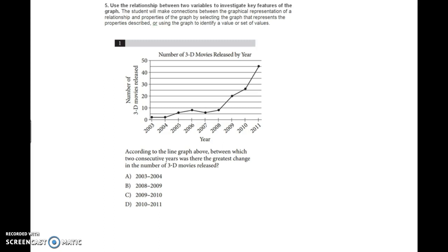This one is just reading and understanding a graph. According to the graph, which two consecutive years had the greatest change in the number of 3D movies? From 2003 to 2004, there was no change. From 2008 to 2009, it went from 20 to 8, a change of 12. From 2009 to 2010, maybe 25 to 20, a 5-unit change. From 2010 to 2011, it went from 25 to 45, a change of 20 units. That's the biggest change.